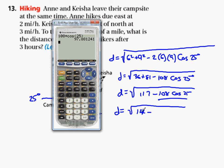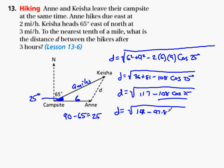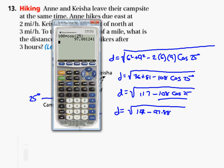So we're going to go 108 times cosine of 25, and we wind up with 97.88. 97.88.